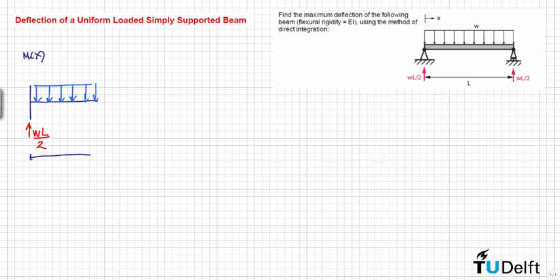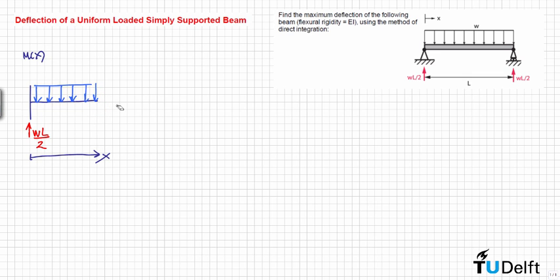At a point x, we recall that we define this internal distribution of moments as positive when we have compression in the upper part of the beam. This vertical reaction force is creating a moment, and the internal reaction goes in the opposite direction — therefore this is positive. The contribution of the moment created by this reaction force is positive and equal to wL divided by 2 times x.